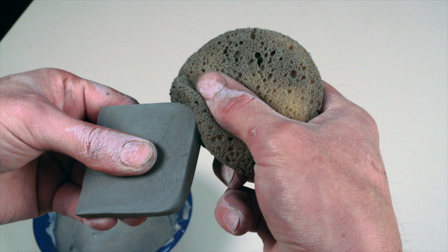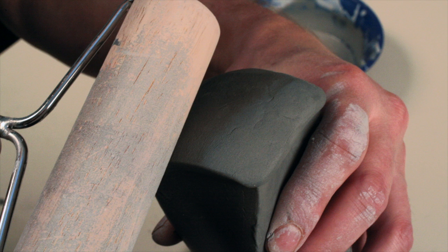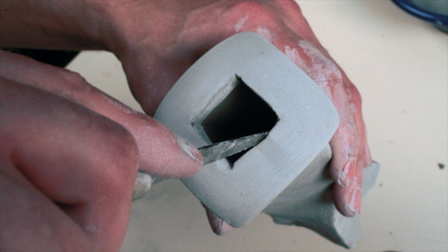Use a sponge to smooth out the 2-1⁄2-inch square and then score and slip it to the top of the extruded form. Cut a 1-inch square opening out of the top of the extruded form.